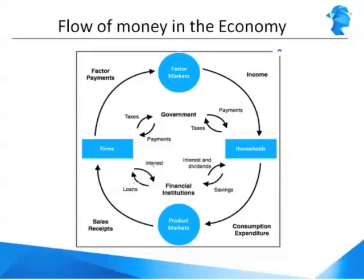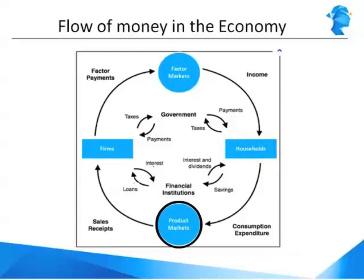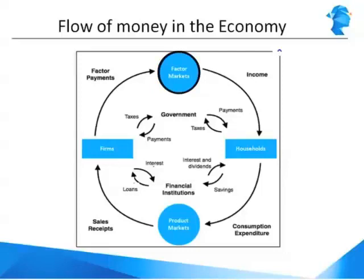Let's start from one part of this circle — households, you and I. We go to the product markets to get consumption-related goods. Firms and companies make goods in bulk and sell them to multiple product markets. These firms and companies go to the factor market to purchase labor, land, and raw materials. And who is part of the factor market? We, the householders, are part of the factor market — this is where we get our payment from. Thus the same money circulates within so many entities.